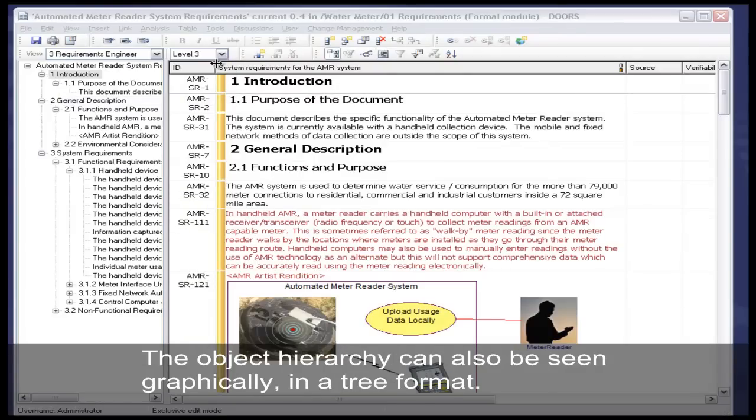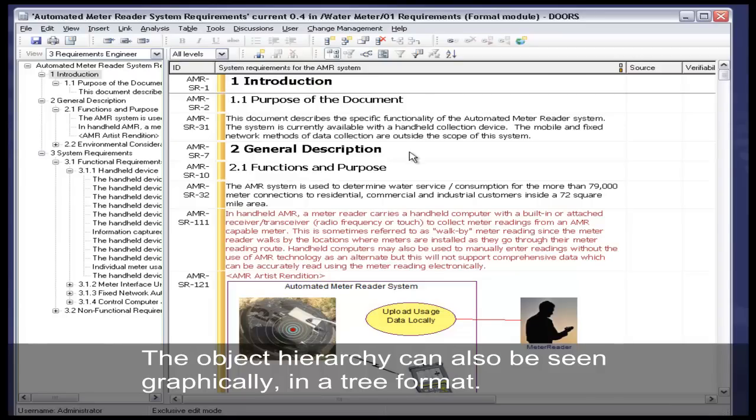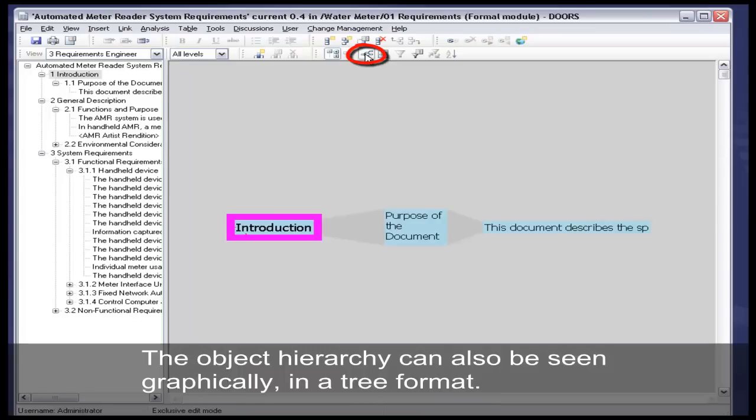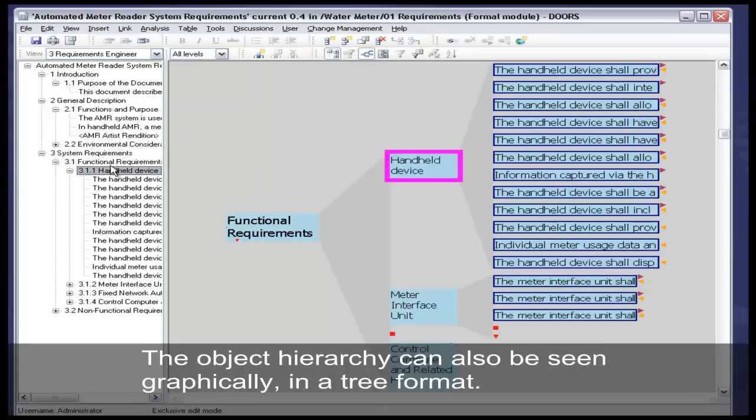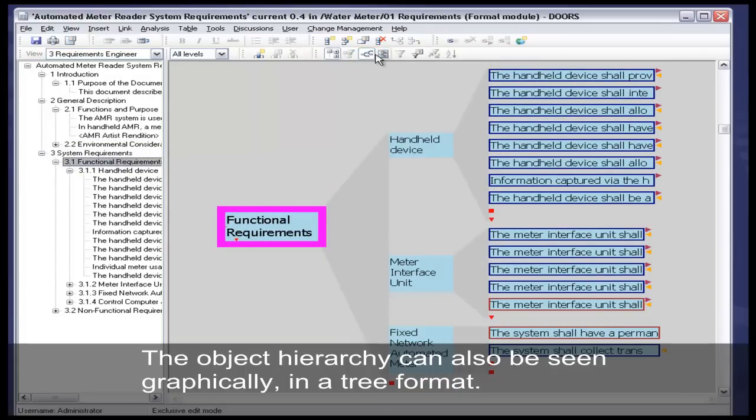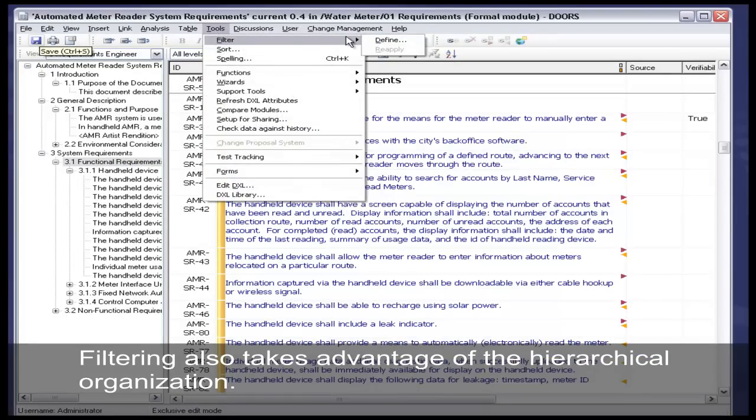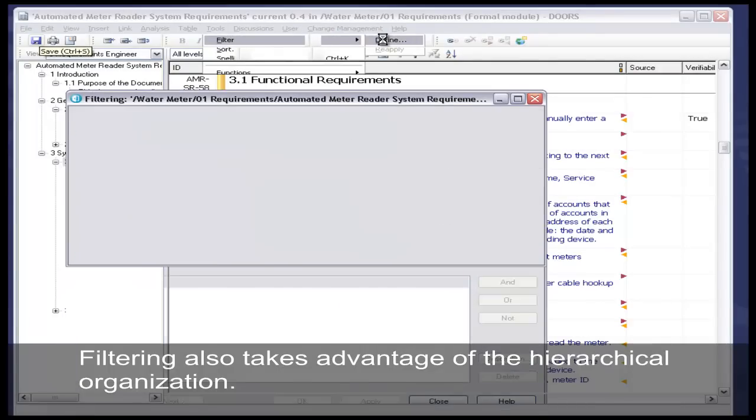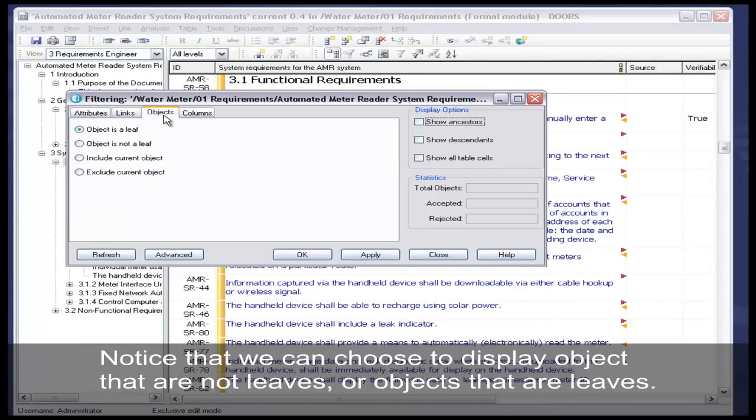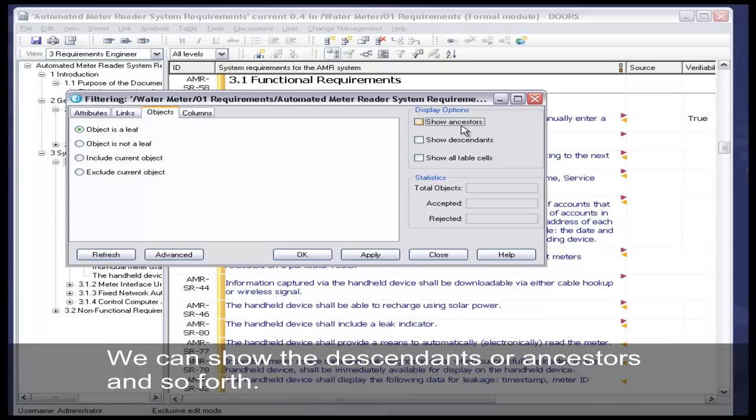The object hierarchy can also be seen graphically in a tree format. Filtering also takes advantage of the hierarchical organization. Notice that we can choose to select objects that are not leaves, or objects that are leaves. We can show the descendants or ancestors, and so forth.